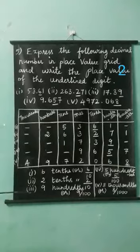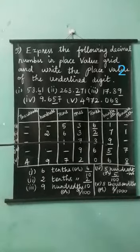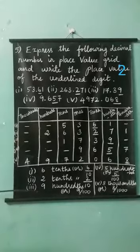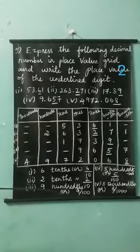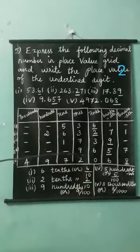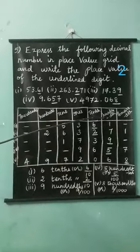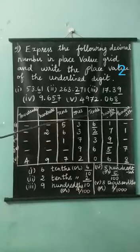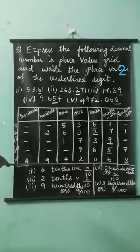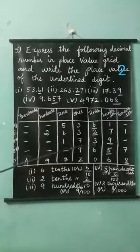See the third number. Nine — where is nine? Nine is in hundredth place, so we write nine-hundredths or nine by hundred. Fourth one: see the underlined number five. Where is five? Five is in hundredth place, so we write five-hundredths or five by hundred.